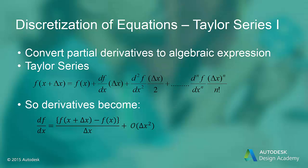Using Taylor series, we can replace partial differential equations with algebraic equations. Notice that if we truncate the Taylor series, there will be an associated error of the order of the first truncated term. For example, if we only consider the first-order term of the Taylor series, the truncation error is on the order of delta x squared. Thus, if there are a lot of nodes, delta x is small and the error is small. However, if there are a lot of nodes, the solution will take longer to solve, so a balance is struck between accuracy and computation time.